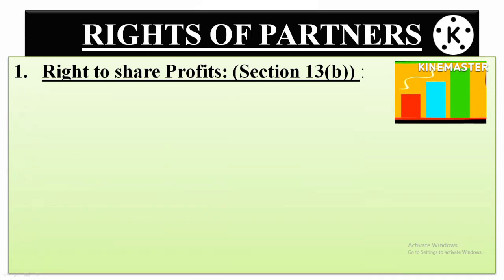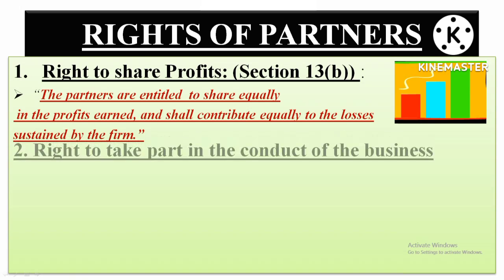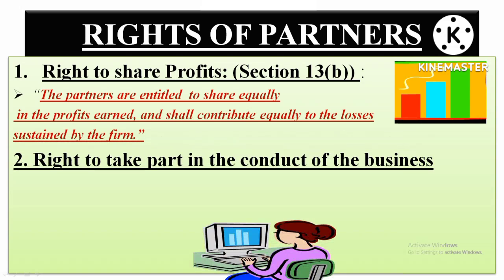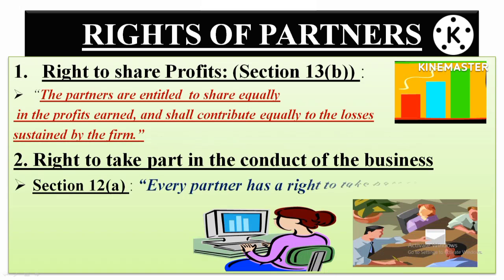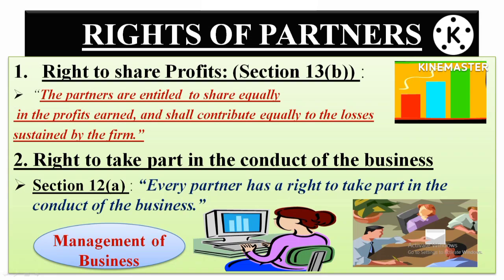Looking at each right individually: under section 13 subsection B, every partner has the right to share profits — meaning whatever the firm is earning, every partner can receive profits. With that, every partner is equally liable to sustain any loss to the firm equally. Then we have the right to take part in the conduct of the business. Section 12 subsection A confers the right to take part in the conduct of the business, which refers to the management — the day-to-day management and decision-taking — and all partners equally can take part.